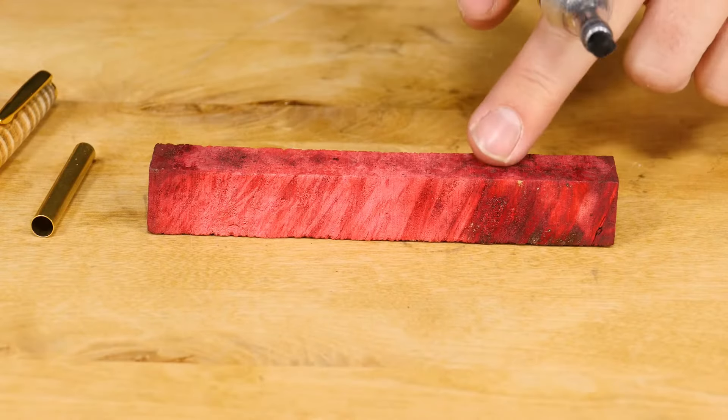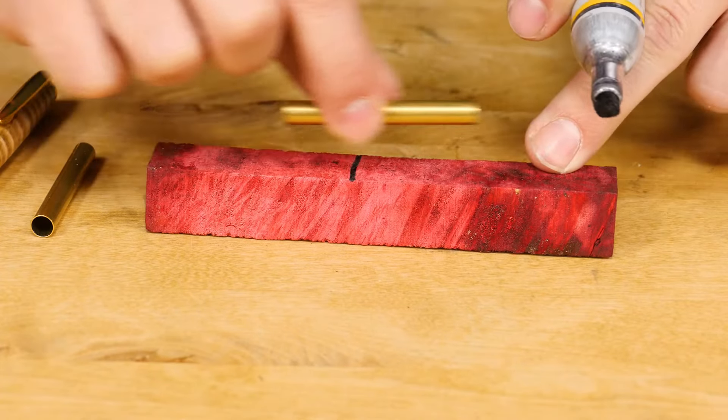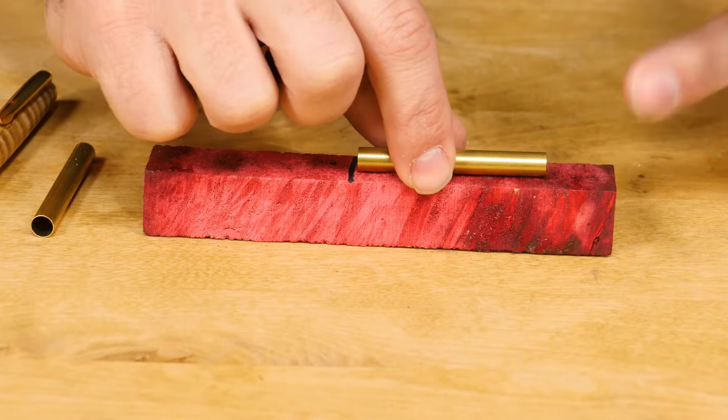Now take the brass tubes and place one on top of the blank, flush with the end. Make a mark about a quarter inch longer than the tube, then repeat with the second tube.